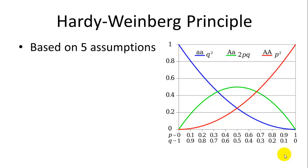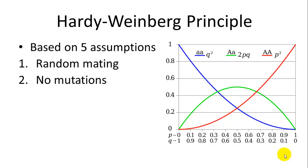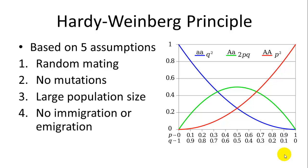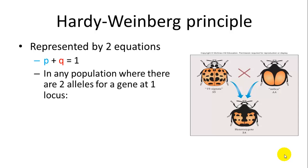The Hardy-Weinberg principle is used to test whether evolution is occurring within a population. It is based on five assumptions: random mating, no mutations, a large population size, no immigration or emigration, and no natural selection. Basically, if all of these conditions are met, you just have random mating, there is no selection, no evolution occurring, and no change in allele frequencies.